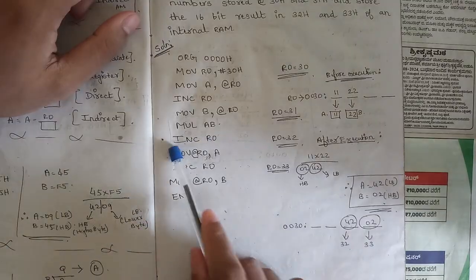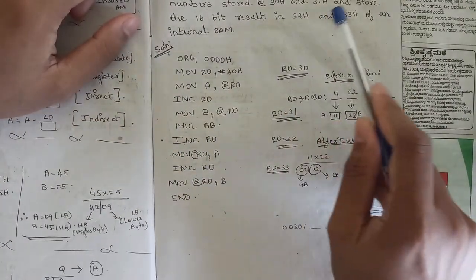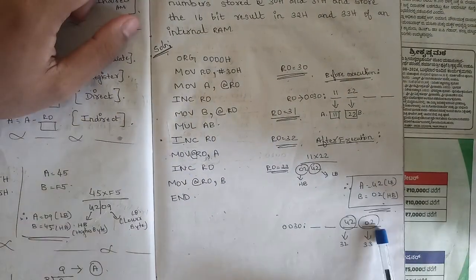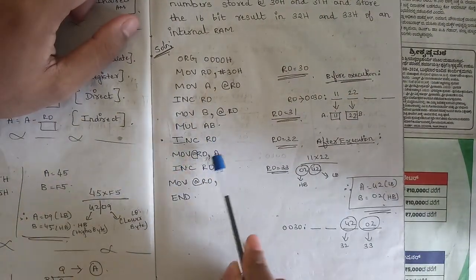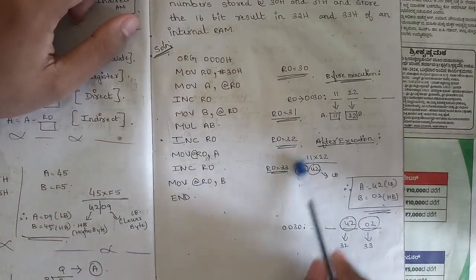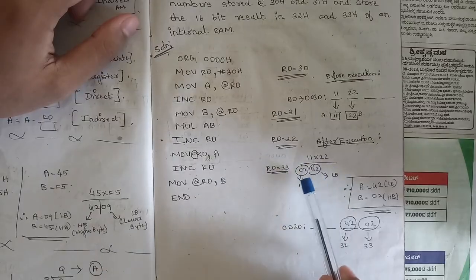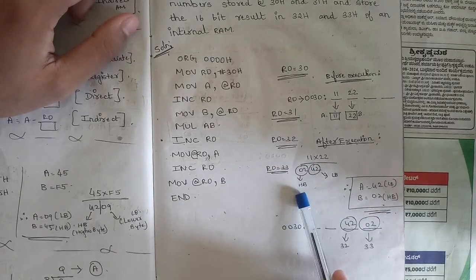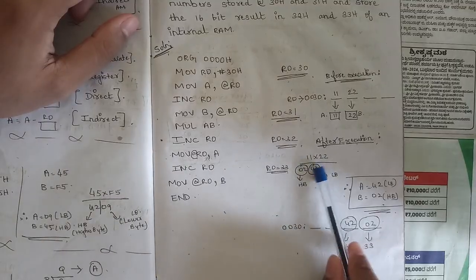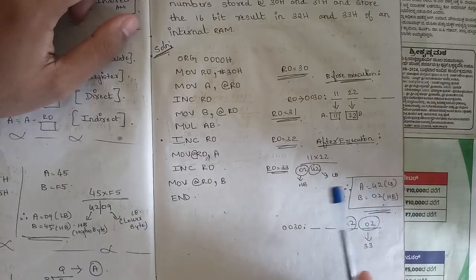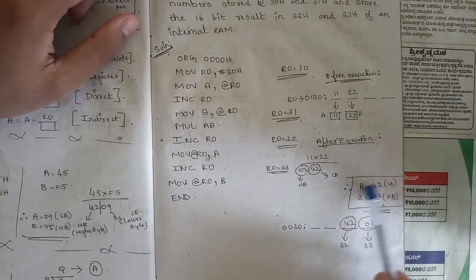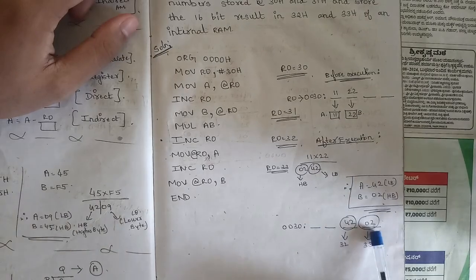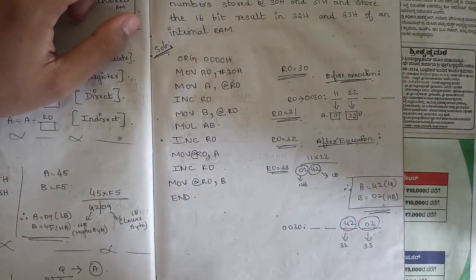After MUL AB, increment R0 since we need to store the 16-bit result in 32H and 33H, where 32H stores the LSB and 33H stores the MSB. Then increment R0 again, MOV @R0, A. After calculation, 11H × 22H gives 0242H in hexadecimal, where the last two digits are the LSB and the first two are the MSB. The lower byte always stores the value of A and the higher byte always stores the value of B, so A is stored at 32H and B at 33H.